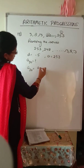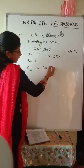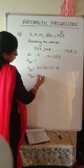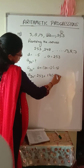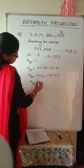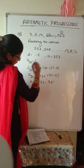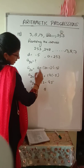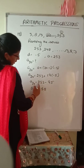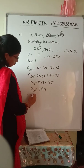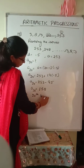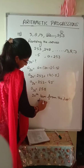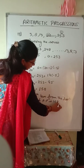A20 equals A plus (n minus 1) into D, so A20 equals 253 plus 19 into (minus 5), which gives 253 minus 95 equals 158. Therefore the 20th term from the last of the AP is 158.